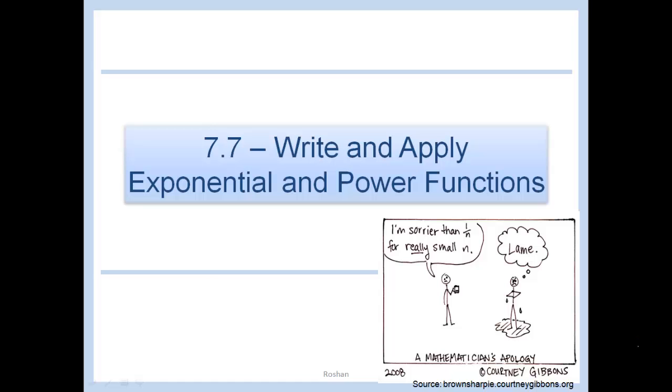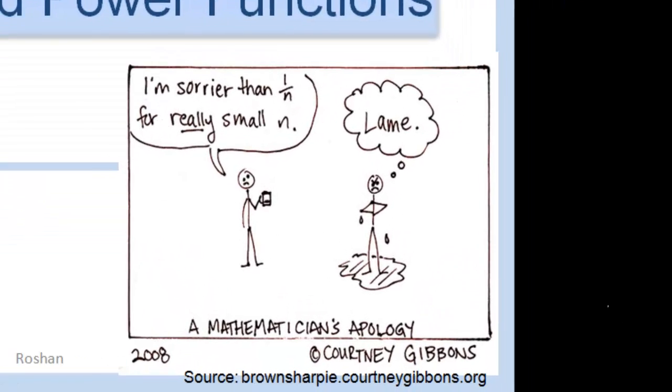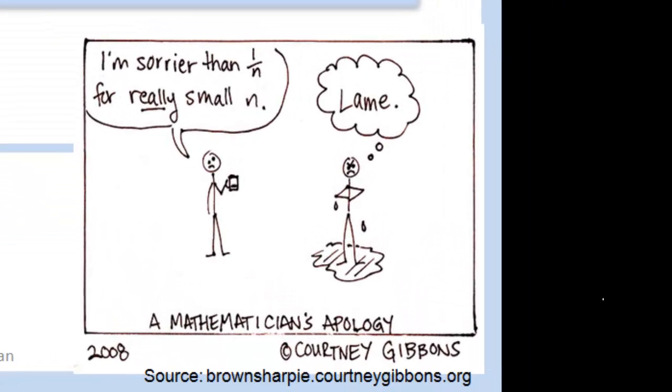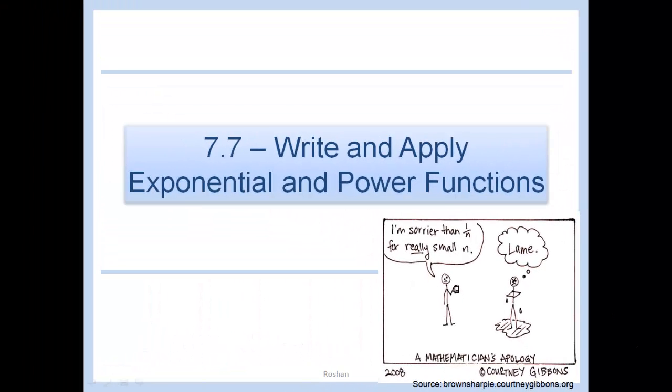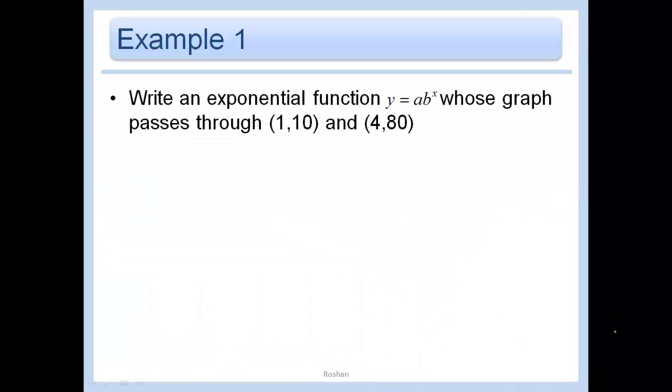7.7 Write and Apply Exponential and Power Functions. A Mathematician's Apology. I'm sorrier than 1 over n for really small n. Lame. Let's go ahead and get into this fun lesson.